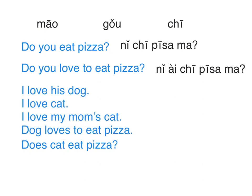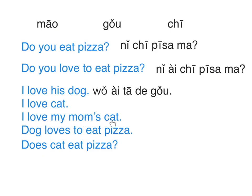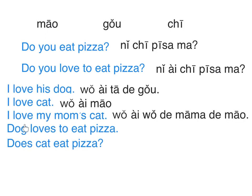Please try these sentences. I love his dog: 我爱他的狗。 I love cat: 我爱猫。 I love my mom's cat: 我爱我的妈妈的猫。 Dog loves to eat pizza: 狗爱吃披萨。 Does the cat eat pizza? 猫吃披萨吗? — there's no 'does' needed.